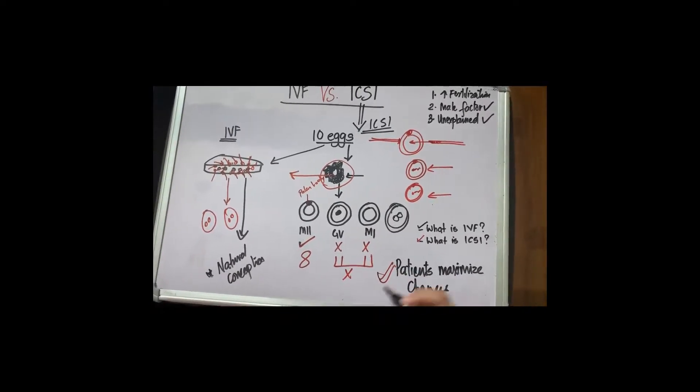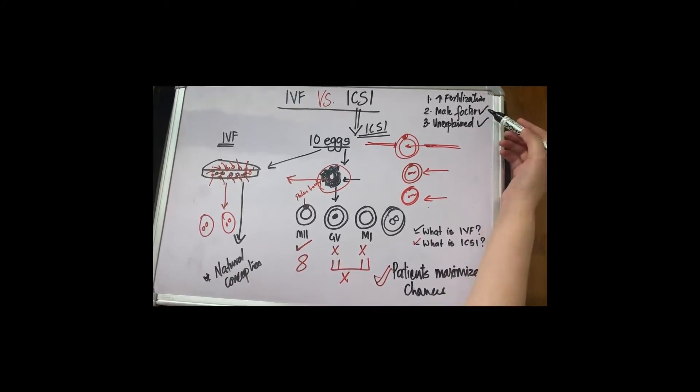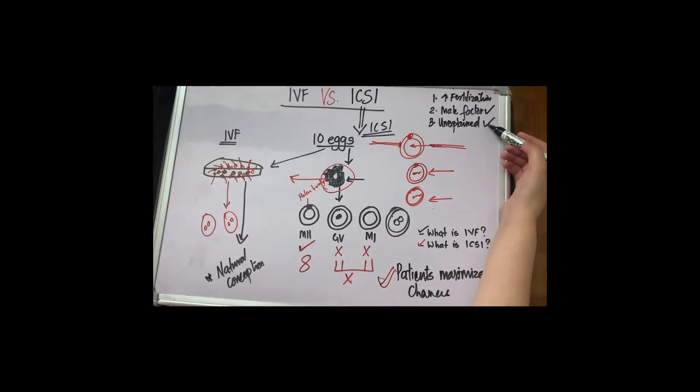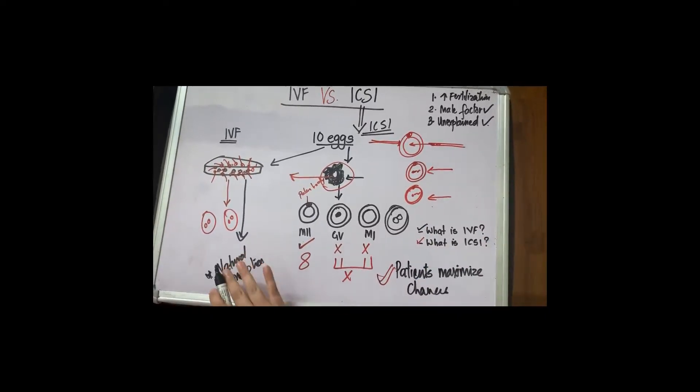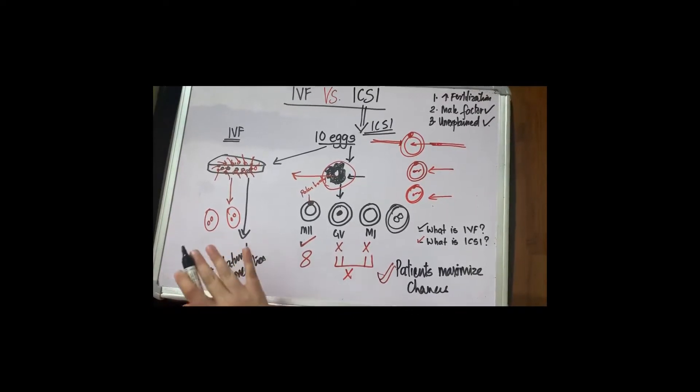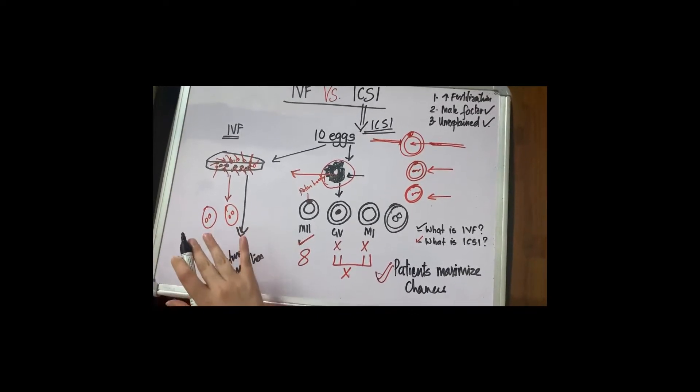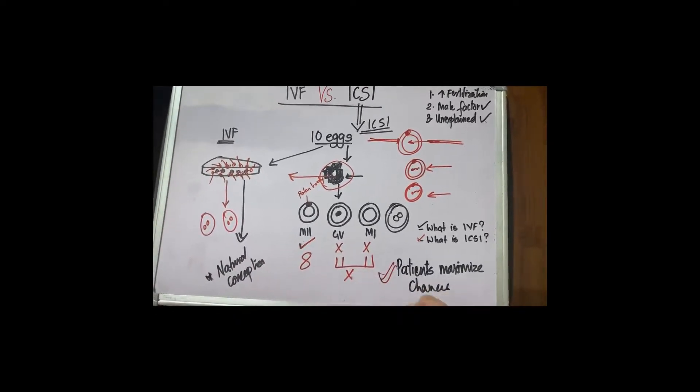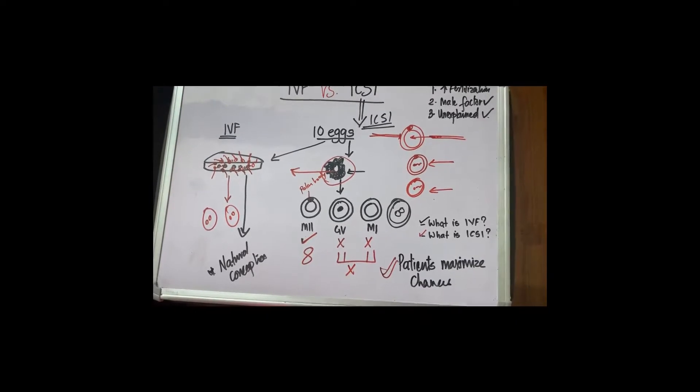The patients want to maximize their chances in their first go, in the first cycle itself. For that reason, ICSI definitely helps you maximize your chances because the fertilization rate is higher. You can rule out male factor in the first time. Even with unexplained cases, what happens with conventional is that there is a lot of trial and error. They may start with IVF but move on with ICSI later.